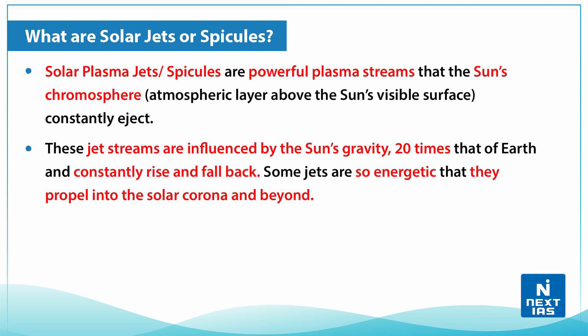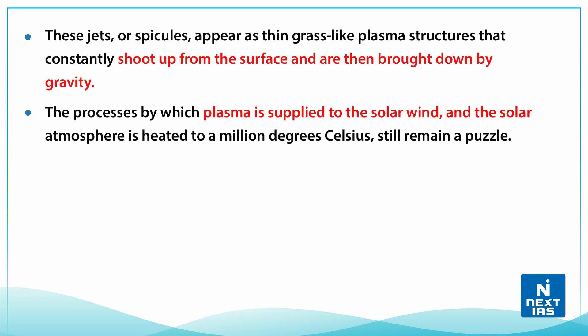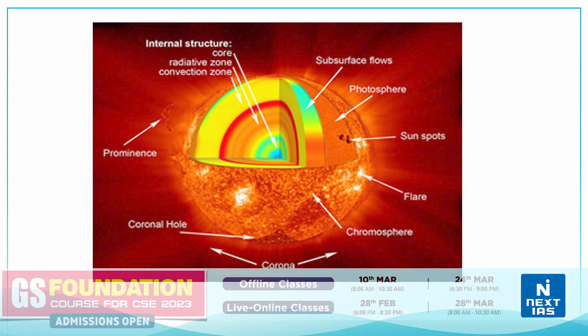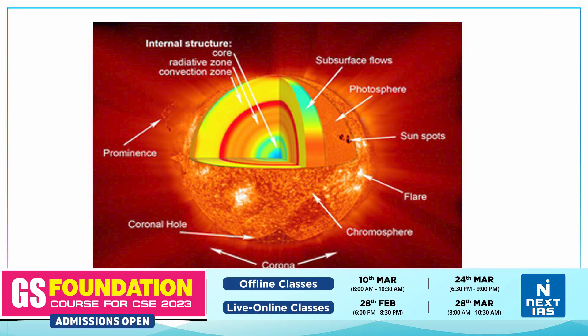The sun's chromosphere is the atmospheric layer above the sun's visible surface. These jet streams are influenced by the sun's gravity, which is 20 times that of the Earth, and constantly rise and fall back. Some jets are so energetic that they propel into the solar corona and beyond. These spicules appear as thin grass-like plasma structures that shoot up from the surface and are then brought down by gravity. The process by which plasma is supplied to the solar wind and the solar atmosphere is heated to a million degrees Celsius still remains a puzzle.